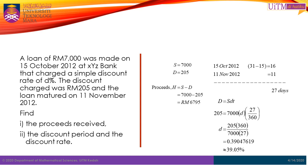Next, in order to find the discount rate, we use the bank discount amount formula D equals SDT, where capital letter D is equal to 205, capital letter S is equal to 7000, and the discount term T using banker's rule is equal to 27 divided by 360.